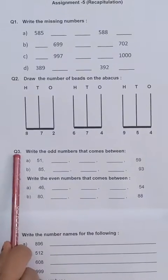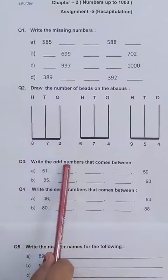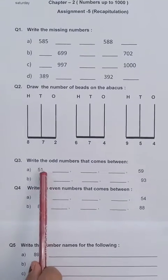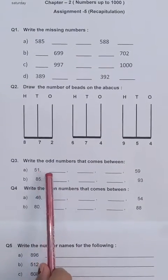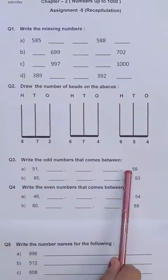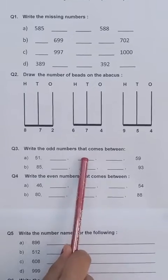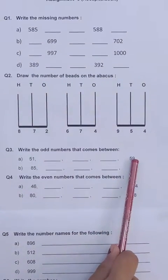Now coming to question number 3. You have to write the odd numbers. That means the numbers which are having 1, 3, 5, 7 at its 1's place they are called as odd numbers. So you will write here 53, 55 and 57 as 59 is already given.